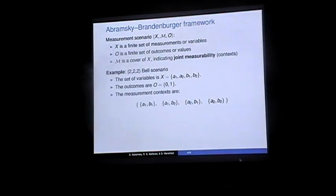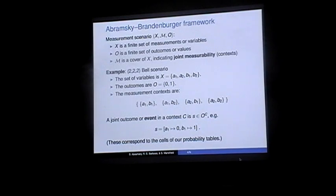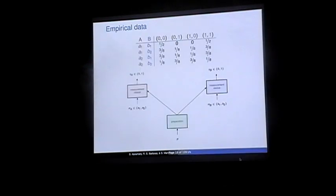Going back to the example, the set of measurements was {A1, A2, B1, B2}, the outcomes were 0 and 1, and the measurement contexts were these four, where there's one choice for Alice and one for Bob. A joint outcome or event, denoted S, given a context C, is just an assignment of outcomes to each element of C. For example, this is an event for context A1-B1 where Alice gets 0 and Bob gets 1. These events correspond to the cells of this table.